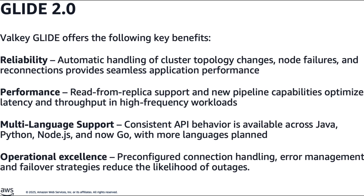The second enhancement was enhanced observability with OpenTelemetry. Valky Glide 2.0 introduces OpenTelemetry integration, providing enhanced application observability through comprehensive telemetry data collection. This highly requested feature enables developers to monitor client-side performance in distributed systems using traces, metrics, and logs, with support for multiple programming languages and observability backends like Prometheus, Jaeger, and Amazon CloudWatch. Data is exported via OTLP protocol to collectors for routing to preferred monitoring platforms.